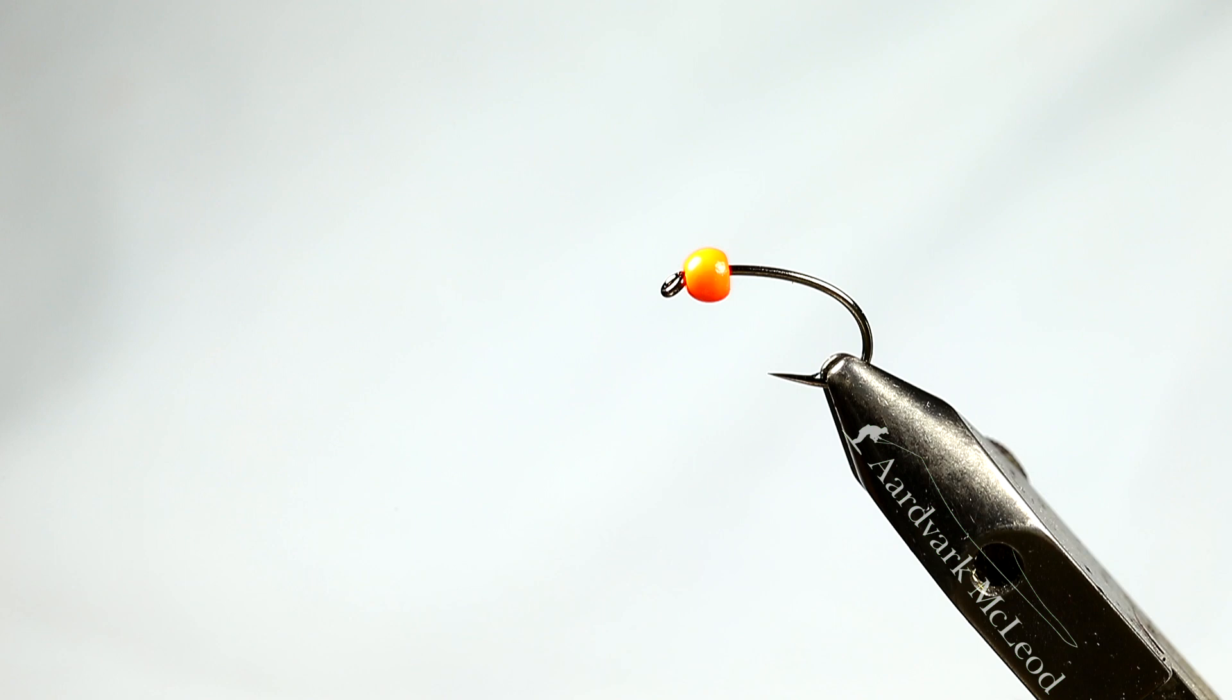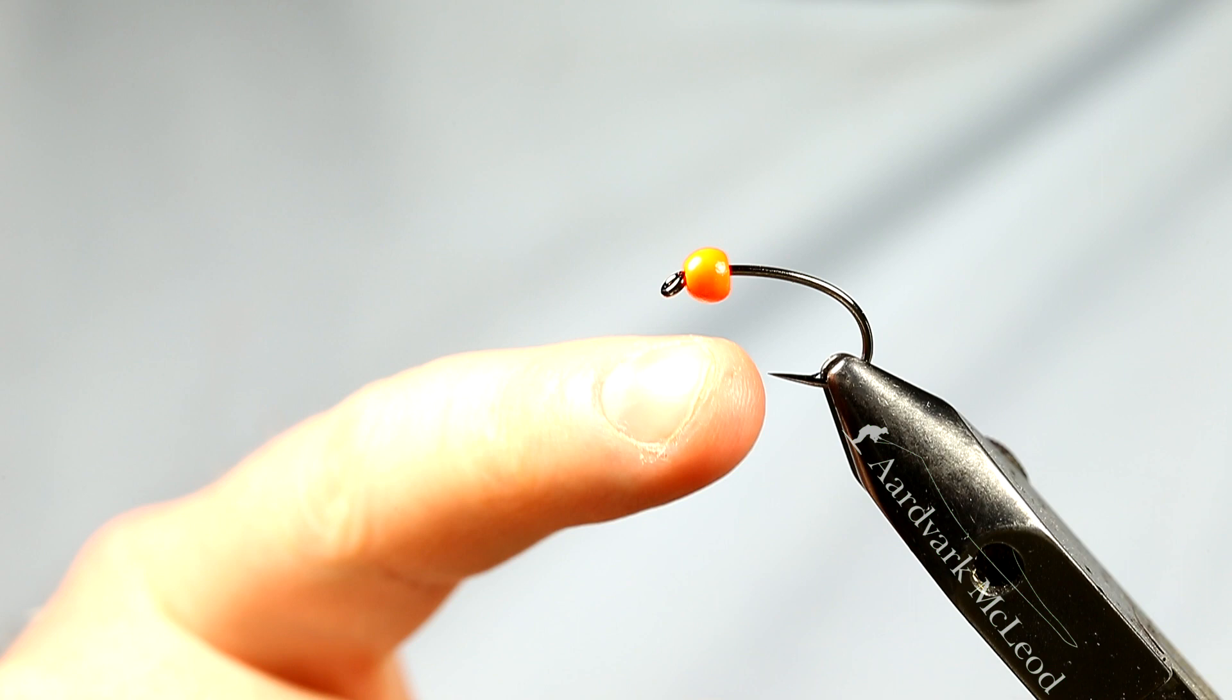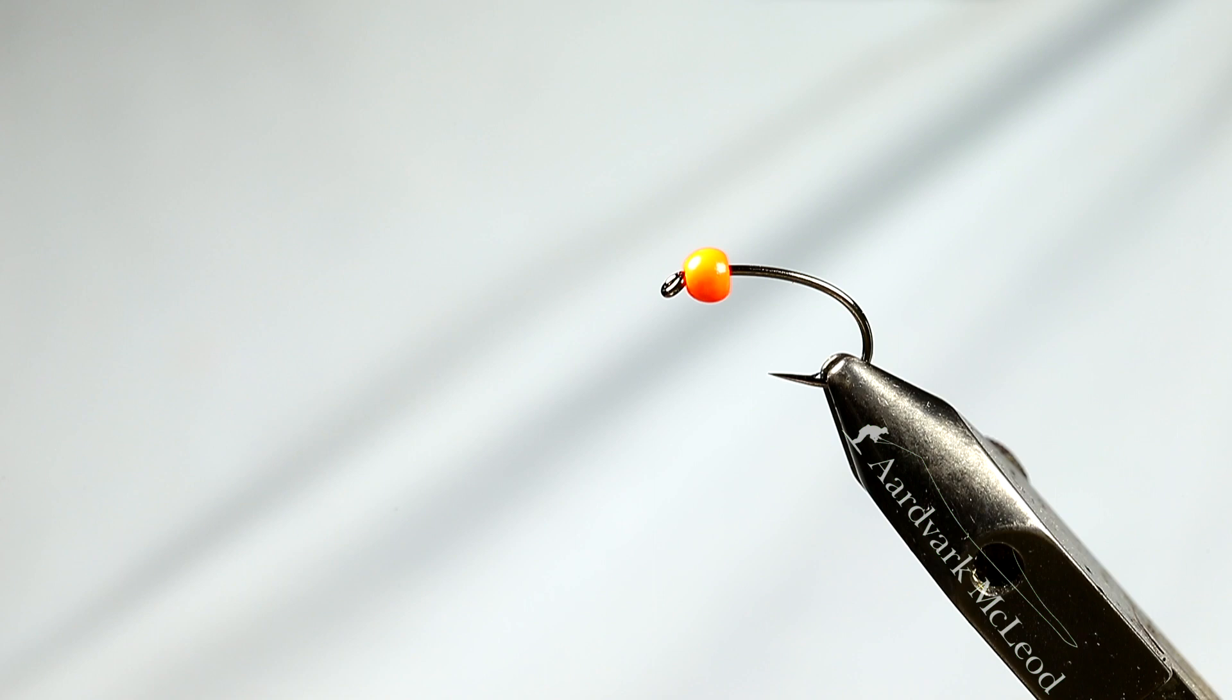This pattern, as you can see, I'm actually tying it on a curved, very strong wire curved shank hook like a grub or shrimp hook. These are very strong hooks. I actually prefer to tie them on carp fishing hooks, they tend to be a much stronger wire than the majority of hooks specifically designated for fly tying for trout and so forth.